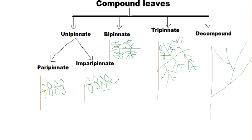In unipinnate, it can be paripinnate or imparipinnate. The midrib on which the leaflets grow is technically called the rachis. If there are more branches from the midrib — in bipinnate or tripinnate types — those branches are called rachillae. In paripinnate, the leaflets are paired — the word 'pari' comes from 'pair' — so all leaflets come in pairs.